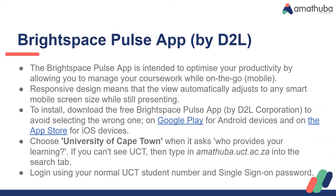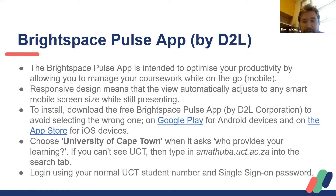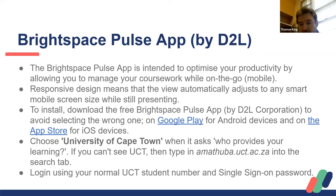Amatuwa is powered by Brightspace, like Vula was powered by Sakai — that's why it's called the Brightspace Pulse app. The app allows you to optimize your time so you can access your courses while traveling from a mobile device, particularly a cell phone. Brightspace is noted as one of the most responsive platforms, so it should work very nicely on your mobile screen.